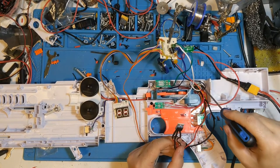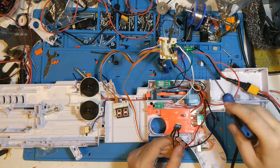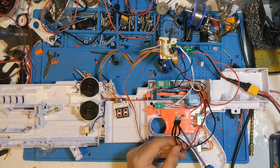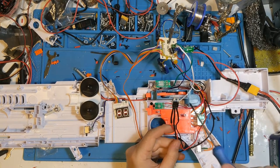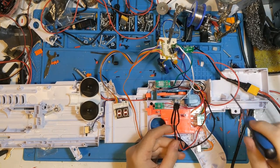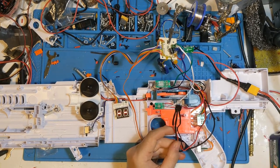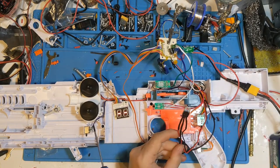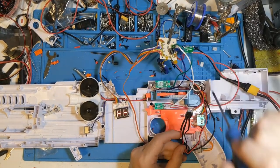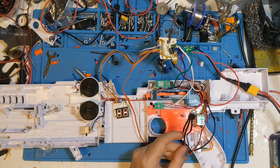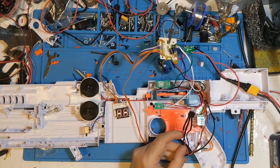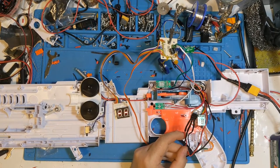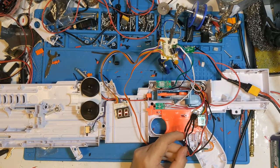What that means is when this board—which is part of the brains of the blaster—thinks it's turning on the stock flywheels, it's actually flicking this MOSFET switch. That allows power to flow through the MOSFET straight to the motors. Your 11 to 12 volts from the 3S battery isn't touching any of the important components or silicon—it's just going straight to the motor block. That way you can get the full benefit of LiPo FPS without losing any of the benefits of the sound effects, ammo counter, and all that cool stuff.